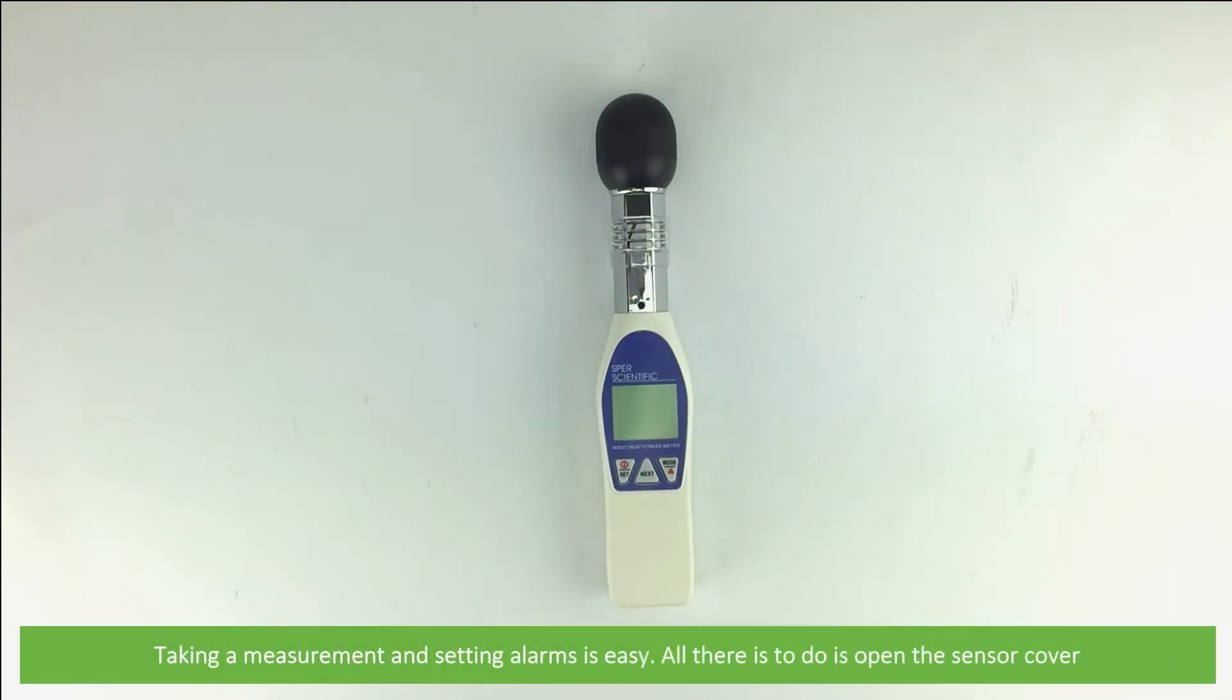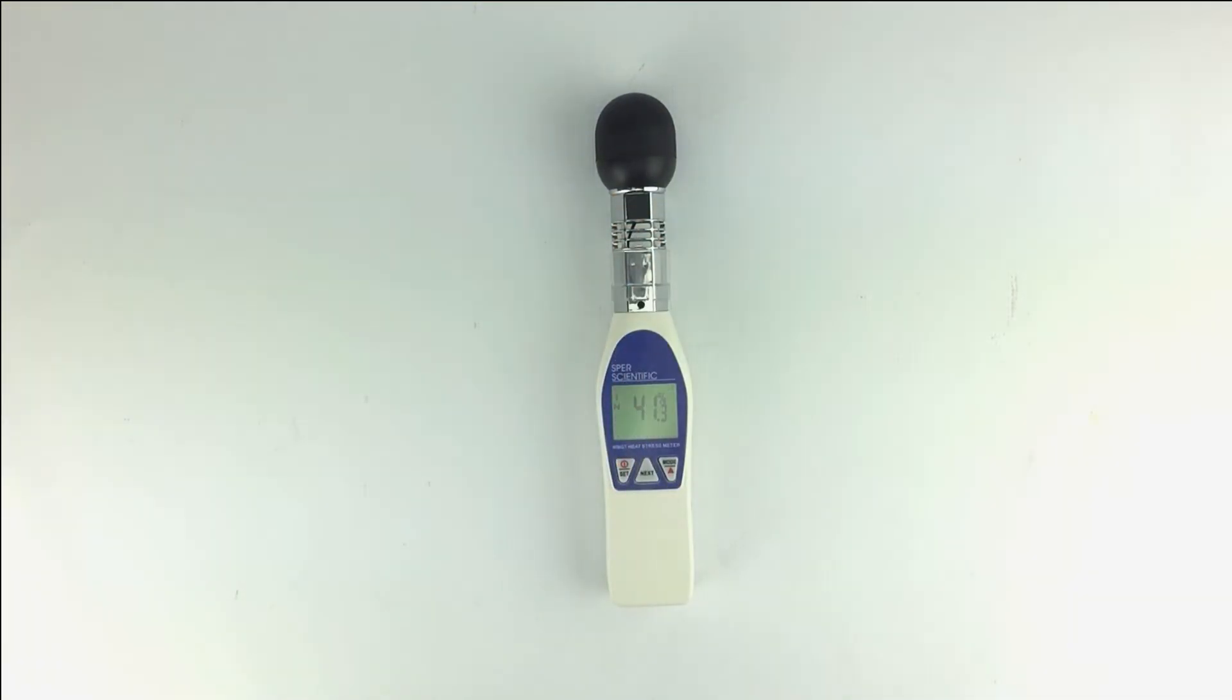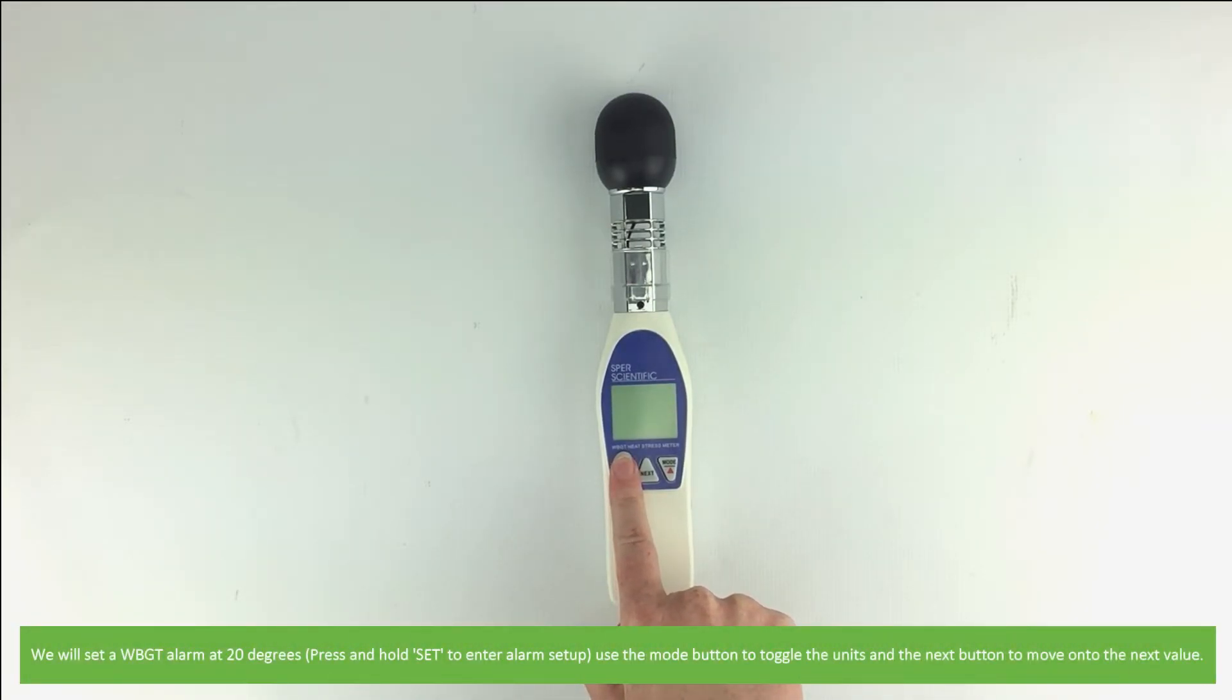Taking a measurement and setting alarms is easy. All there is to do is open the sensor cover. We will set a wet bulb globe temperature alarm at 20 degrees. Use the MODE button to toggle the units and the NEXT button to move on to the next value.